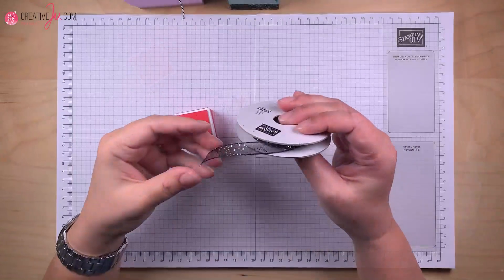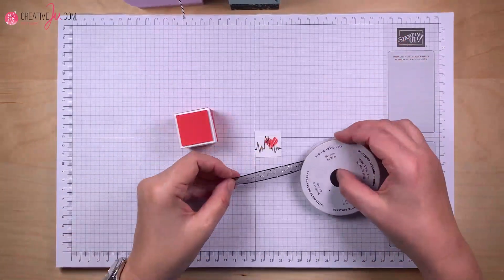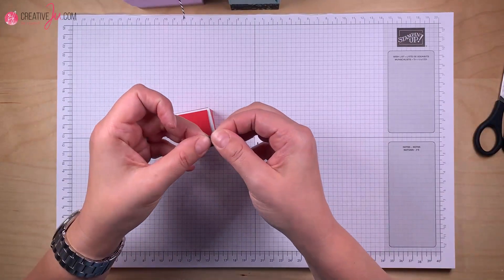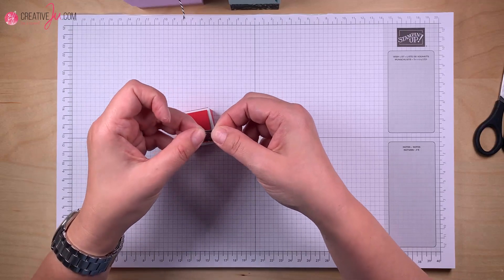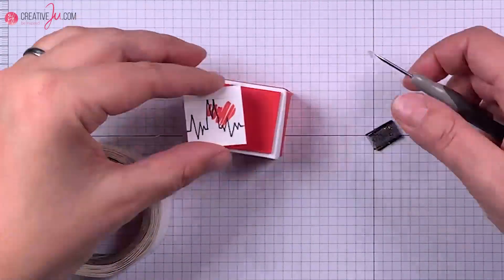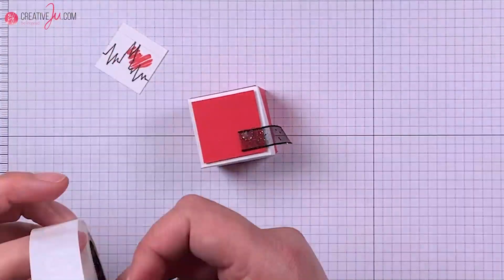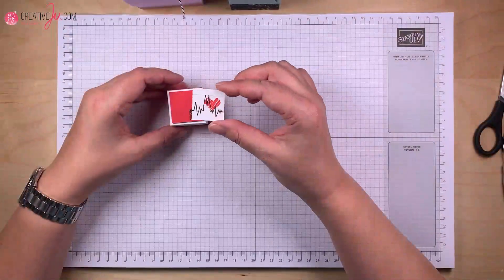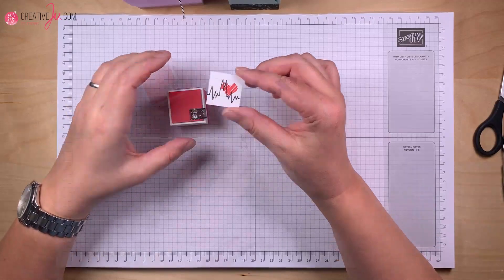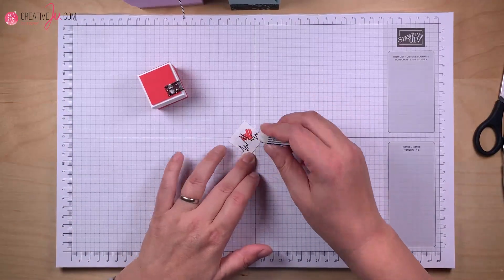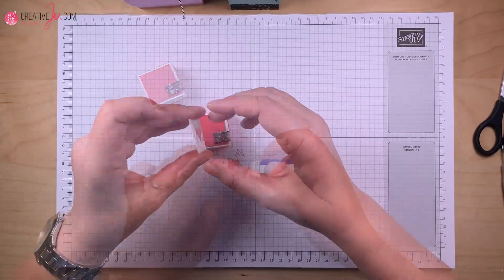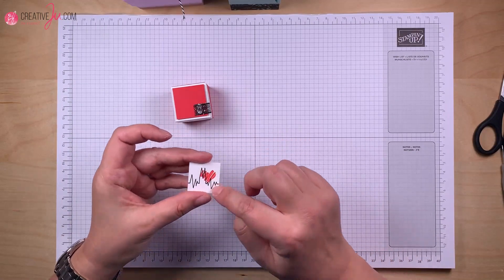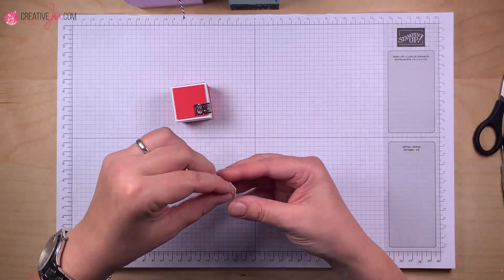Schon ist es fertig. Dann warten wir kurz, bis es trocknet. Solange machen wir das Bändchen fertig, was wir da drunter kleben. Ein ganz bisschen. Ich finde ein bisschen Band oder Kordel, das lockert immer ein bisschen auf. Bevor wir das jetzt ankleben, radieren wir natürlich den Bleistift hier weg. Aufpassen, dass es schon gut getrocknet ist, sonst verschmiert ihr das. Das wäre dann sehr schade.